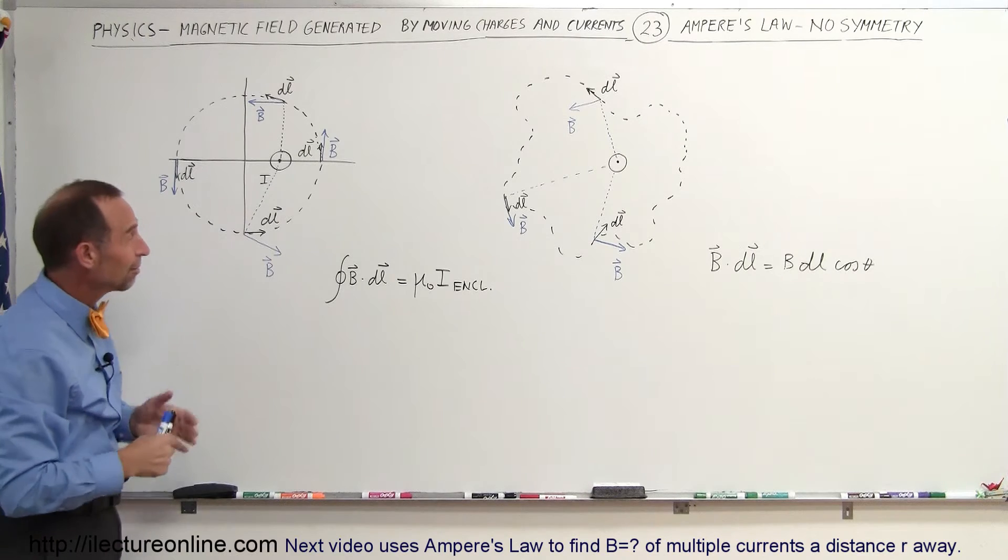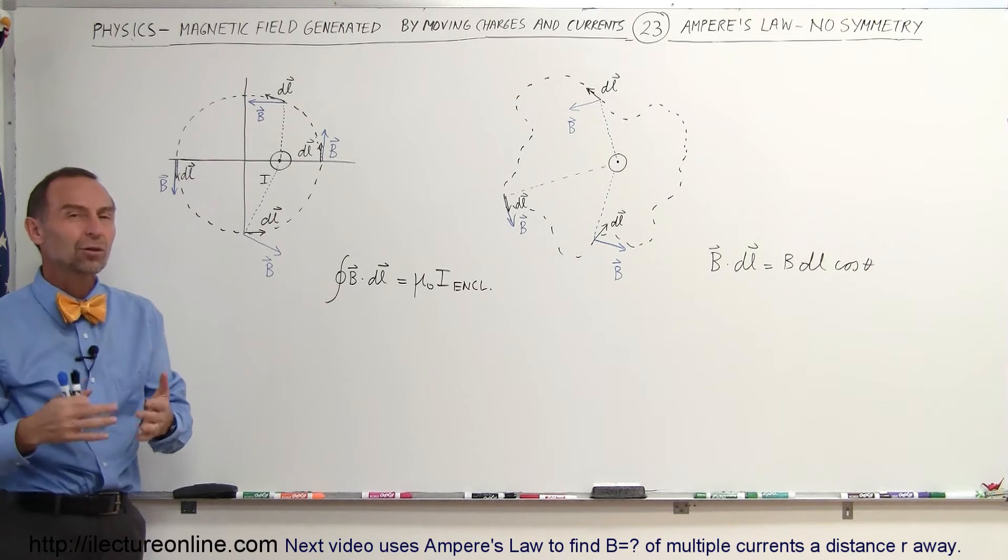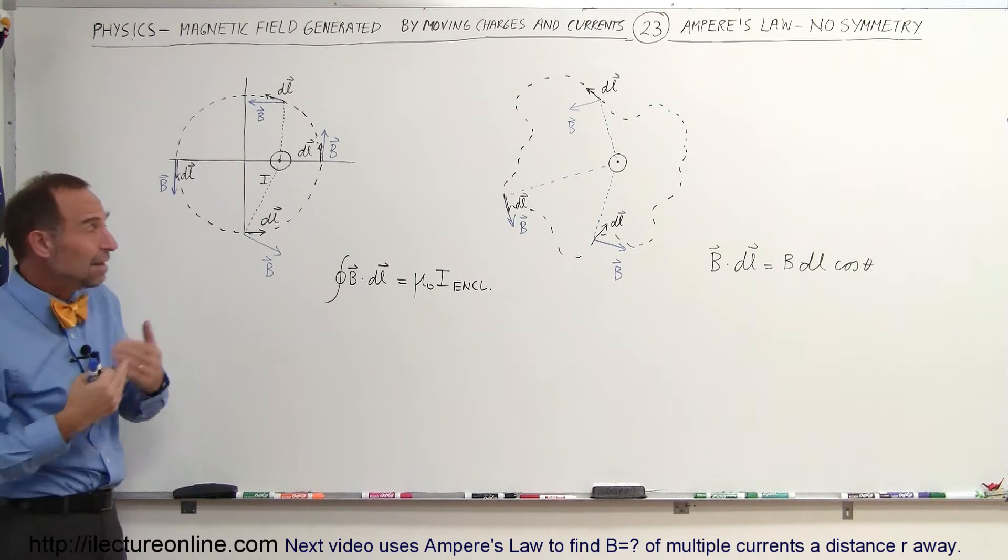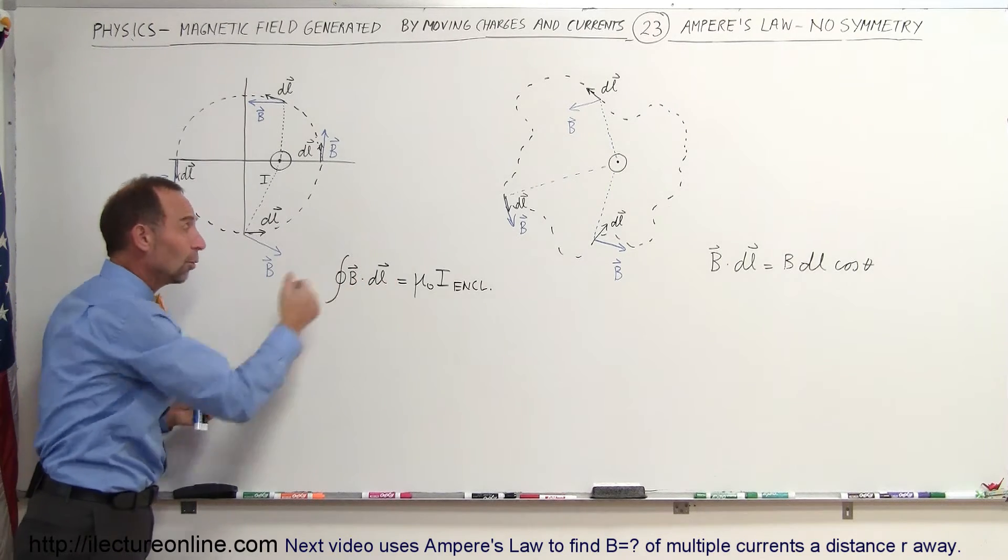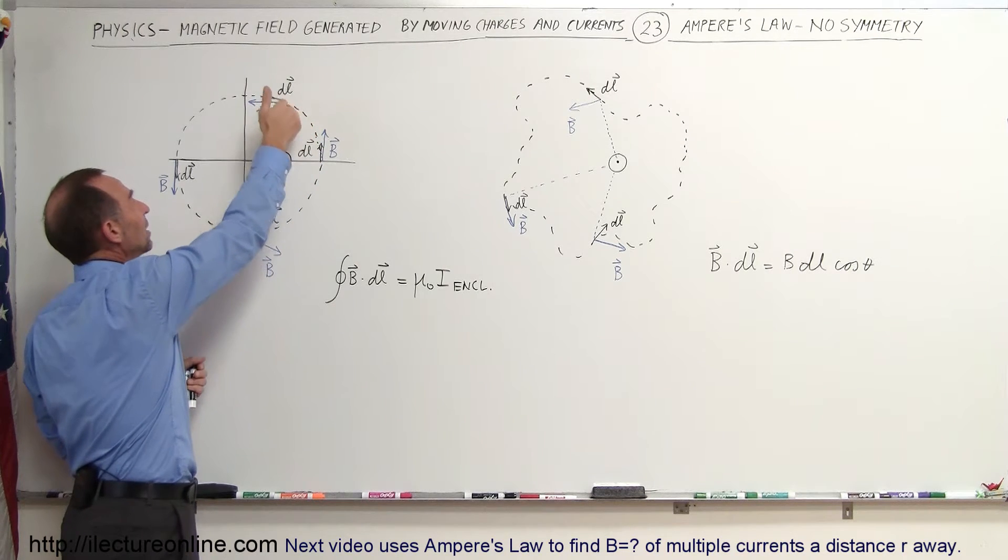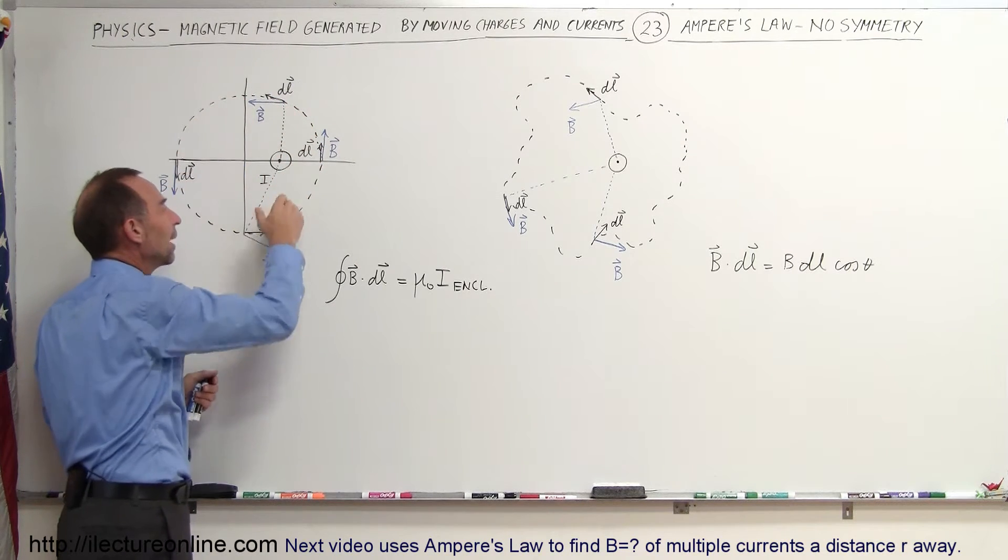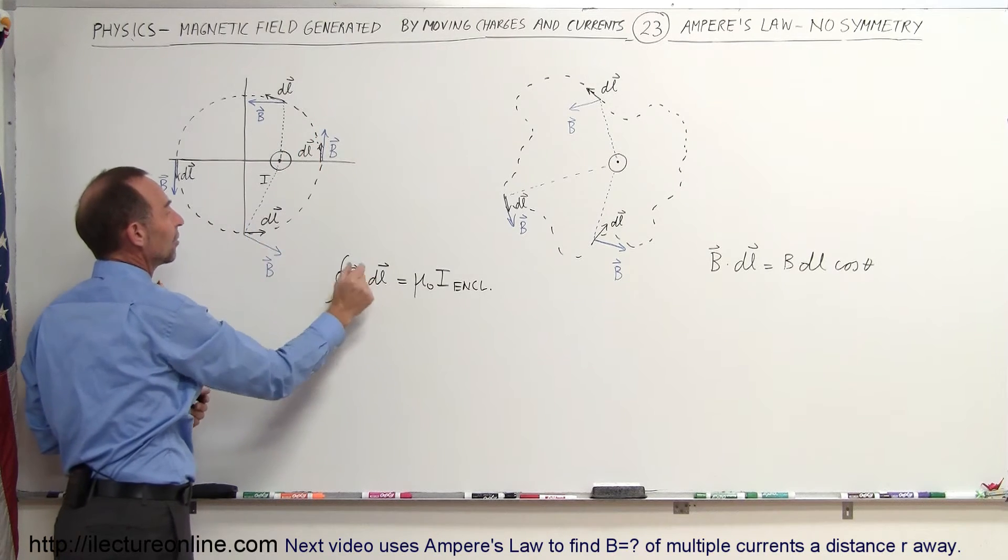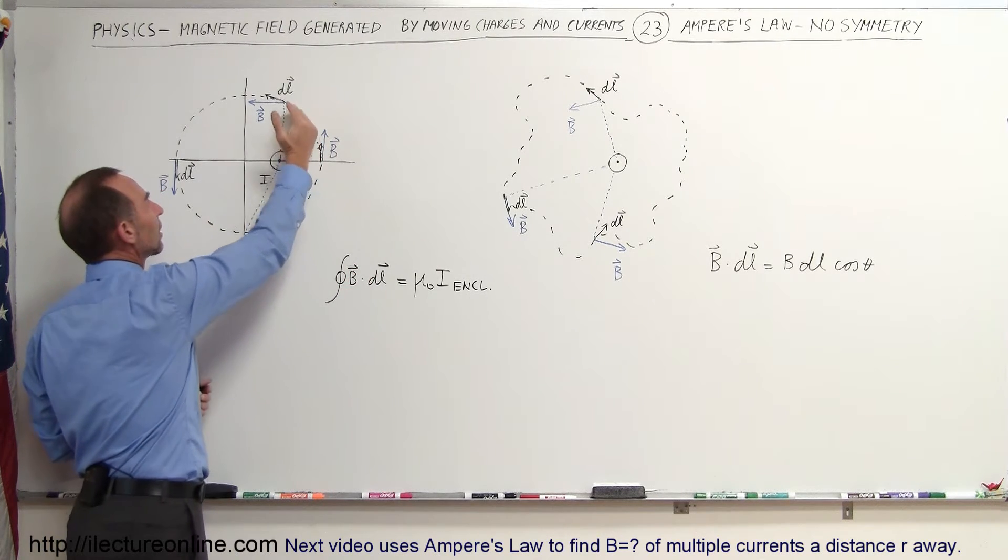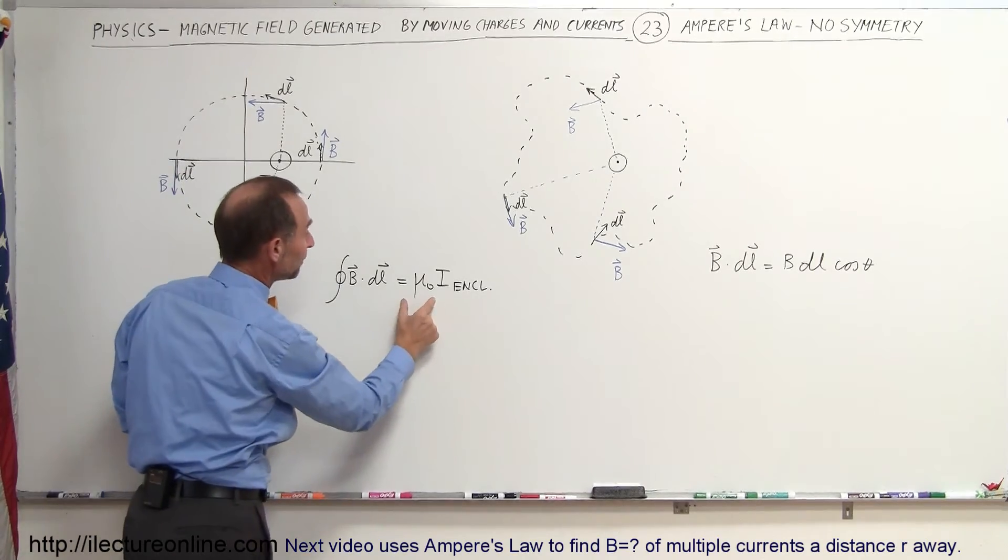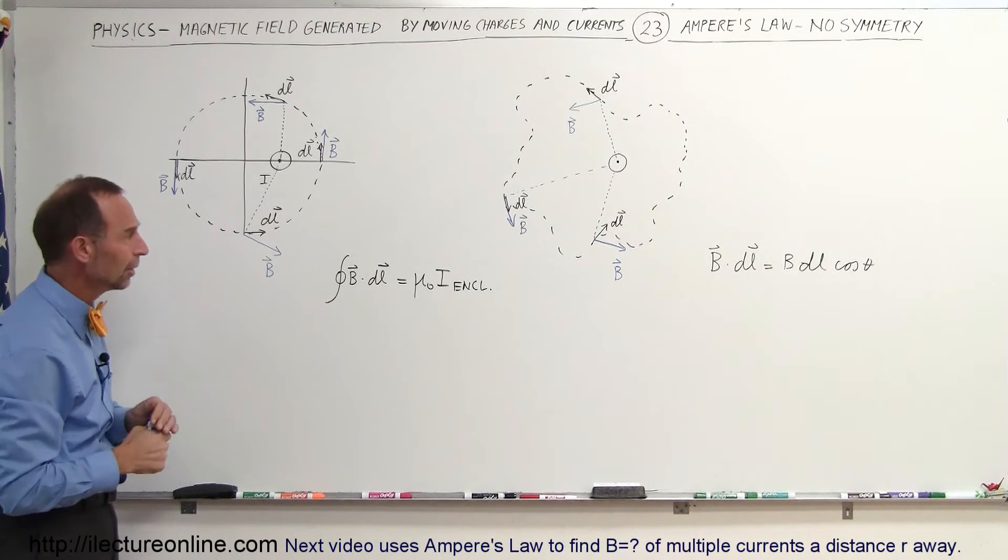That's not a good situation. Mathematically we can probably figure out how to do that, but it would be very complicated. So Ampere's Law, even though it works, this is still correct if we could somehow integrate all the way around the circle and account for the angle being different. We integrate the line integral of the magnetic field multiplied times the line segment, adjusting for the angle constantly as we integrate around, and it will always equal mu naught times the current enclosed by that line integral.